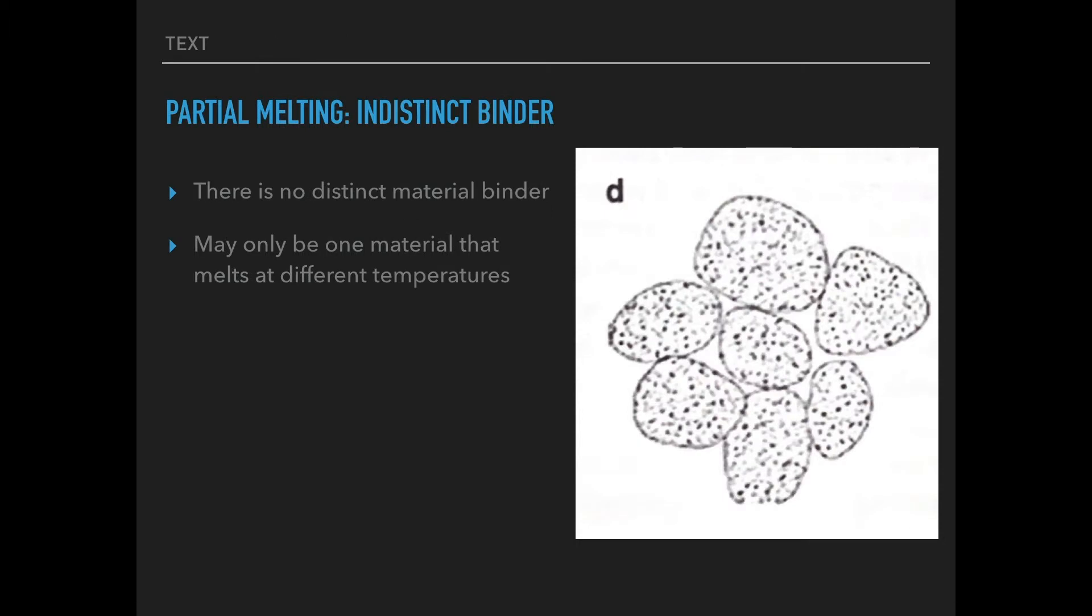Indistinct binder. This type is used when there isn't a distinct material binder, but it can have a similar effect. For example, we could have a material that melts and hardens really easily, so when the laser hits it, it may melt, but not all the way.